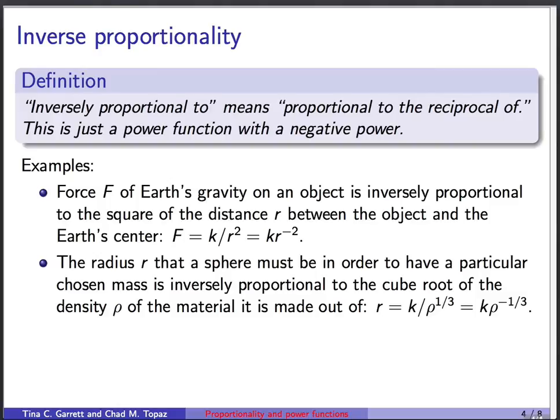Inverse proportionality just means proportional to the reciprocal of. And this is just a power function with a negative power. So if we say that the force of Earth's gravity on an object is inversely proportional to the square of the distance r between the object and the Earth's center, we write F is k divided by r squared. Or we can use a negative exponent to write k times r to the negative 2.